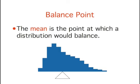The mean is the point on which a distribution would balance. In the figure, the fulcrum, the top of the triangle, is the mean of the distribution.